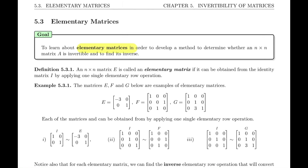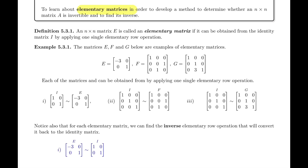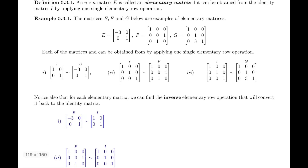The first step is to define elementary matrices and give some examples. Definition 5.3.1: an n by n matrix E is called an elementary matrix if it can be obtained from the identity matrix by applying one single elementary row operation. Let's see a couple of examples of that right away in example 5.3.1.